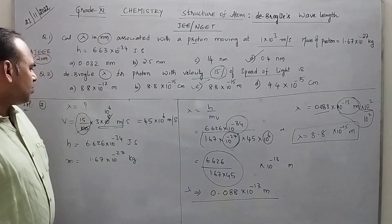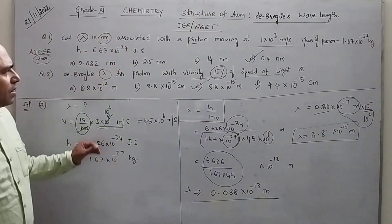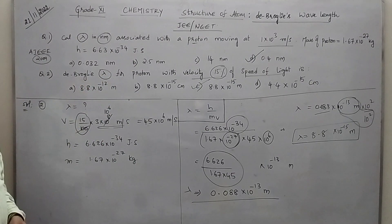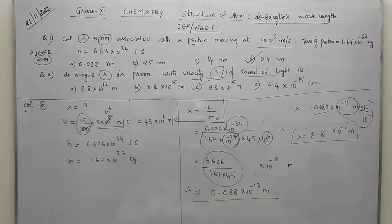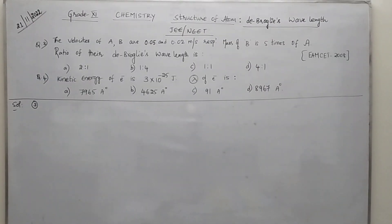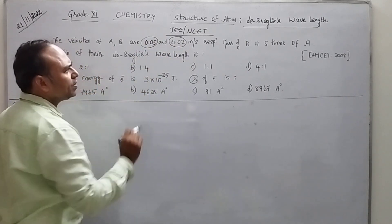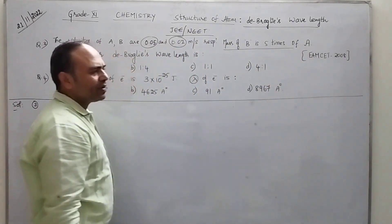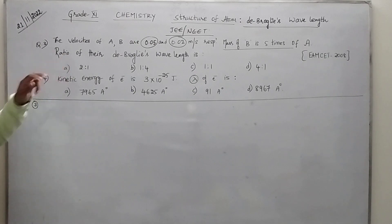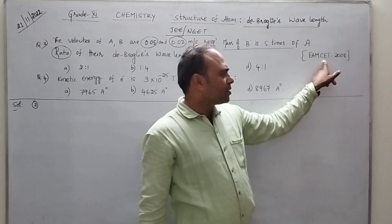Very simple. We have taken lambda equal to H by MV and calculated the first two questions. Now let us move to question 3 and 4. The velocity of A and B is given as 0.05 m/s for A and 0.02 m/s for B. Mass of B is 5 times the mass of A. Calculate the ratio of the de Broglie wavelength — asked in EAMCET 2008.